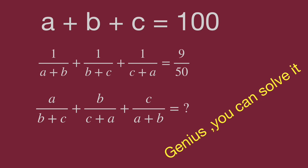We have these equations: a plus b plus c equal to 100, and 1 over (a plus b) plus 1 over (b plus c) plus 1 over (c plus a) equal to 9 over 50. Find the value of a over (b plus c) plus b over (c plus a) plus c over (a plus b).